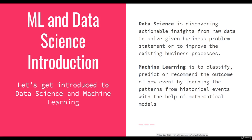So whenever a new business event occurs, we pass that event through the mathematical model, and that mathematical model gives a certain outcome — either classification, prediction, or any recommendation. That helps improve the business and helps take better decisions for the business.